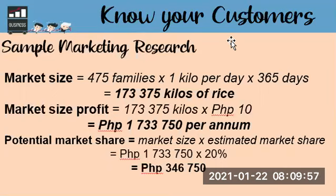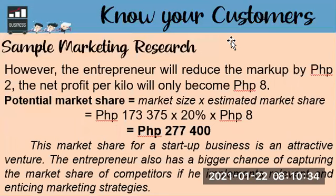Next, we identify the potential market share. The market share of each rice retailing business is 20%. So we multiply our market size profit of 1,733,750 by 20%, which gives us 346,750 pesos as the possible net profit of one rice retailing business given a 20% market share. Since you are just starting up with your business, you will be reducing your markup by 2 pesos — instead of 10 pesos net profit, you will make it 8 pesos.